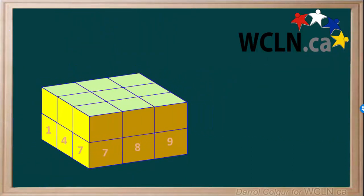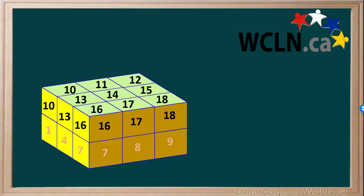Now we'll add 9 more cubes on top of this layer. We have 9 in the first layer, so we'll continue numbering the cubes starting with 10: 11, 12, 13, 14, 15, 16, 17, and 18. So these 2 layers of 9 cubes have a total of 18 cubes.